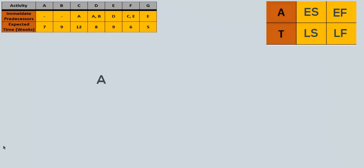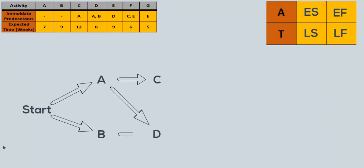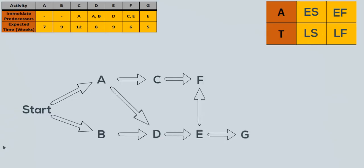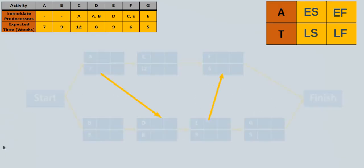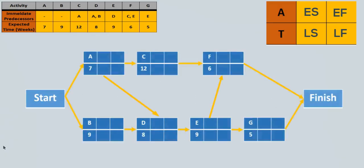Activity A and B have no predecessors, so they can begin at the start. Activity C needs A to be completed before it can start. Then D needs both A and B to be completed. E needs D. F needs C and E, and G depends on E. Since F and G have no successors, they go to the finish. Here is the network with the activity nodes displaying the letters and times.